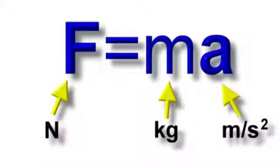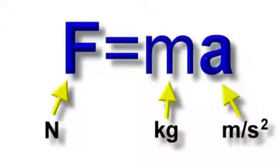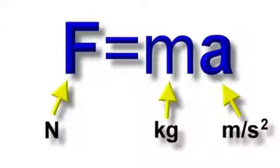Newton's second law is so important, I made a whole video about it. But let's briefly think about it now. F is the resultant force, so the second law is all about unbalanced forces. The equation explains that resultant forces on masses cause accelerations. This might be the mass starts moving from rest, speeds up from already moving, slows down from moving maybe to a stop. A deceleration is a negative acceleration.